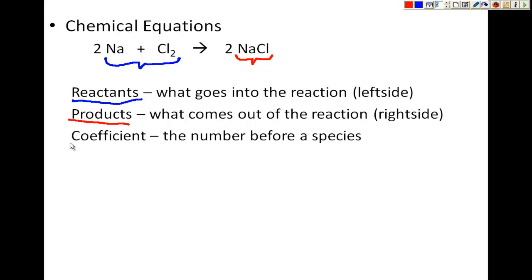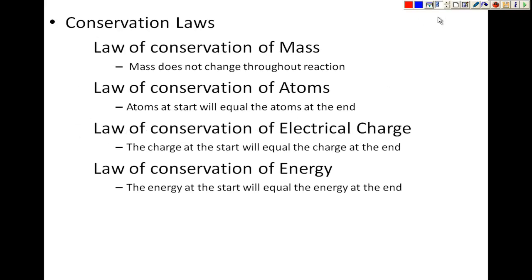The last term we're going to be talking about is coefficients. A coefficient is the number that goes in front — the big numbers in front of a formula. These are not what we're going to be calling coefficients; this subscript just indicates that Cl has bonded with itself because chlorine is diatomic and therefore binds with itself. So coefficients are the big numbers that are in front. Those are some basic definitions of what we see in chemical equations.